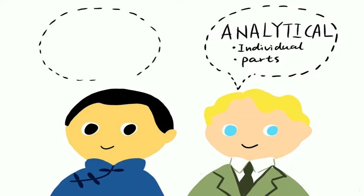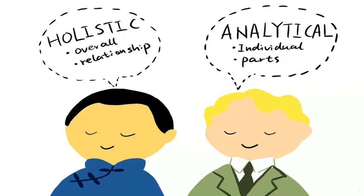Whereas people in Eastern cultures such as East Asians tend to use a holistic thinking style that focuses on the overall pattern of things and how they exist in relationship with other things.